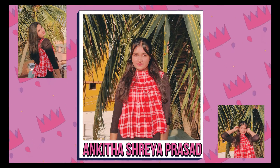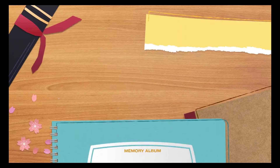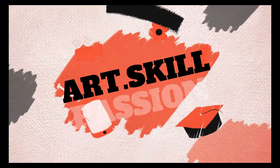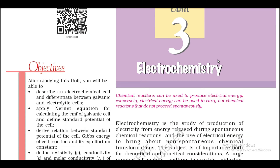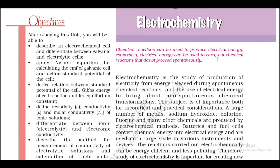Hello, namaste. Myself Ankita Shreya Prasad, and you are listening to Along with NCERT 11th and 12th audio video book presented by Art Skill Passion. Unit 3: Electrochemistry. Electrochemistry is the study of production of electricity from energy released during spontaneous chemical reactions and the use of electrical energy to bring about non-spontaneous chemical transformations.